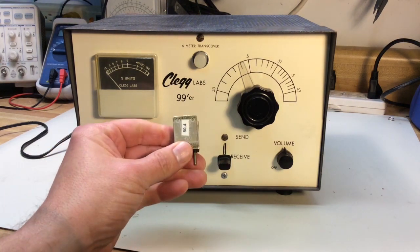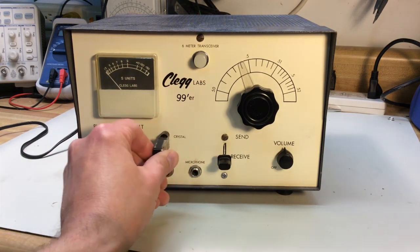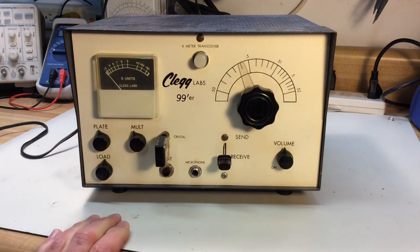It is a crystal-type transmitter. I have a crystal for 50.400 and it did have a tunable receiver. You could add an optional VFO for transmit if you wanted to.